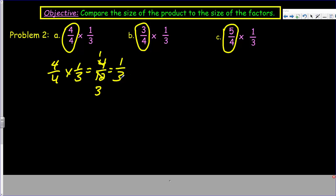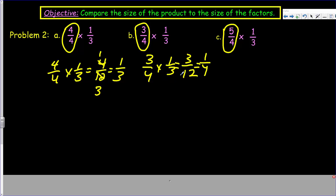Now let's look at 3 fourths. Is the scaling factor more or less than 1? In this case, it's less than 1 — 3 fourths is less than 1. What's going to happen if we multiply that fraction less than 1 with one-third? Our product will be 3 twelfths, and 3 twelfths is less than one-third. It equals one-fourth, and one-fourth is less than one-third. Because we only really wanted part of that fraction — we didn't want 4 fourths — we only wanted 3 equal parts of 4 from that one-third.